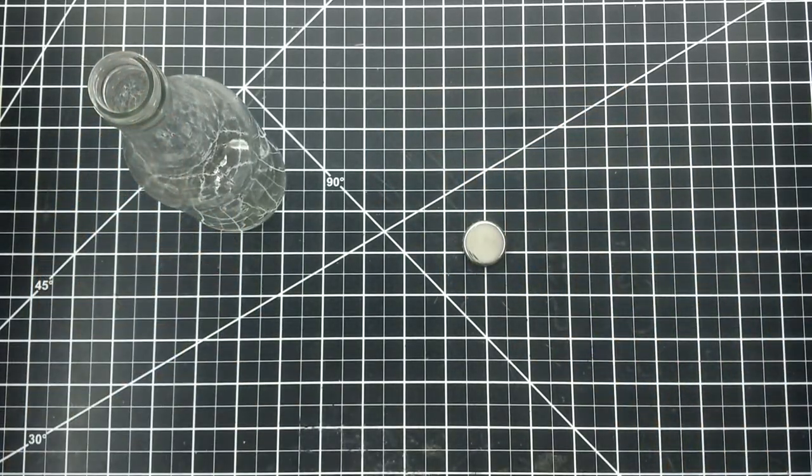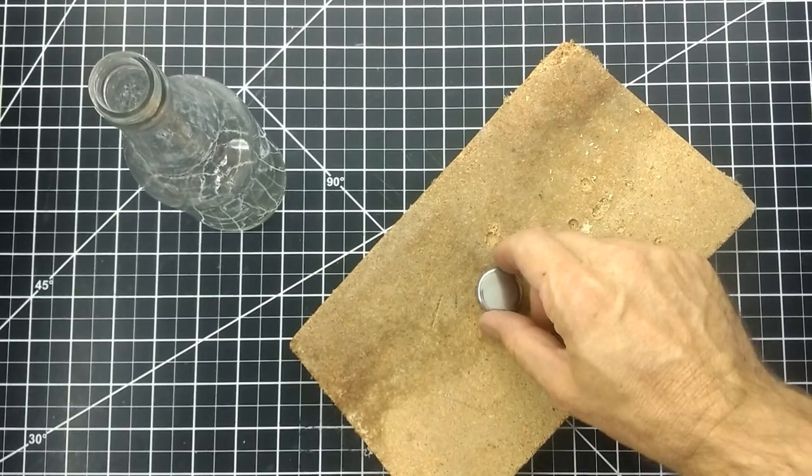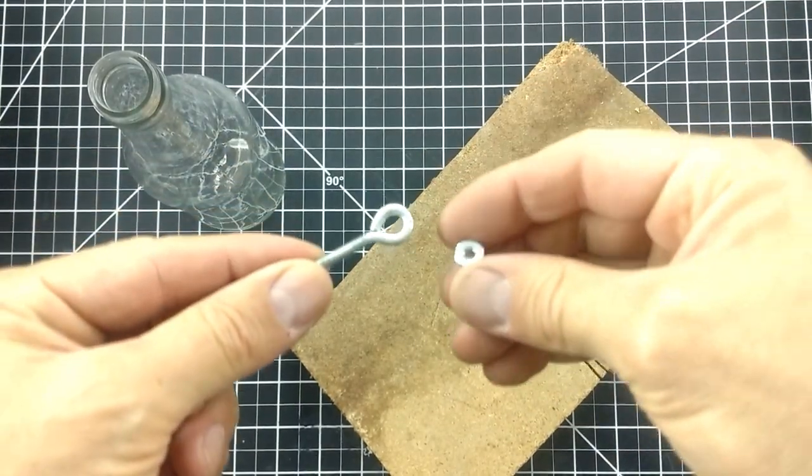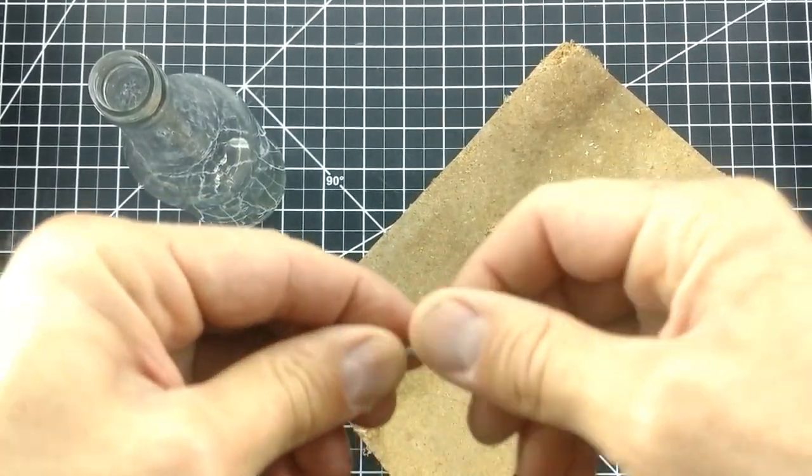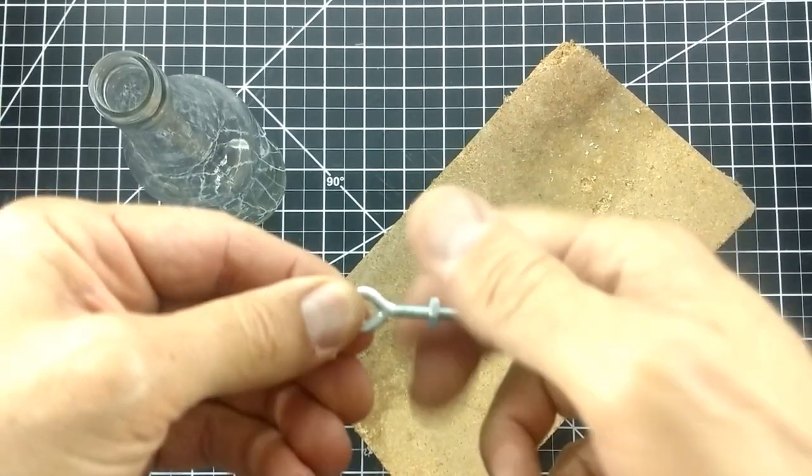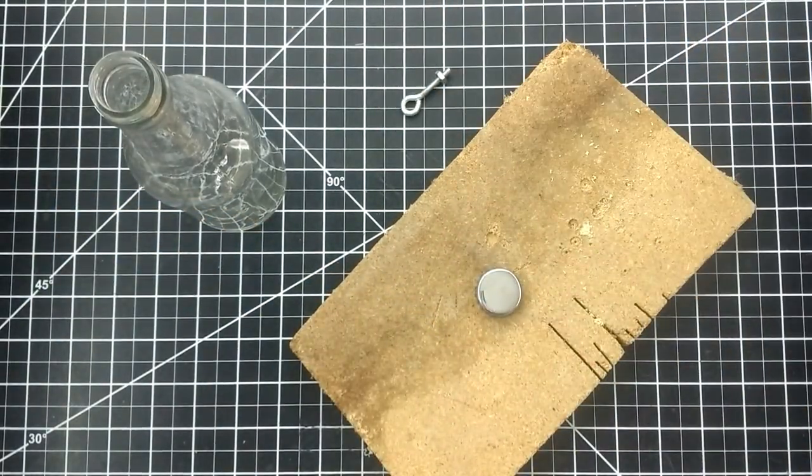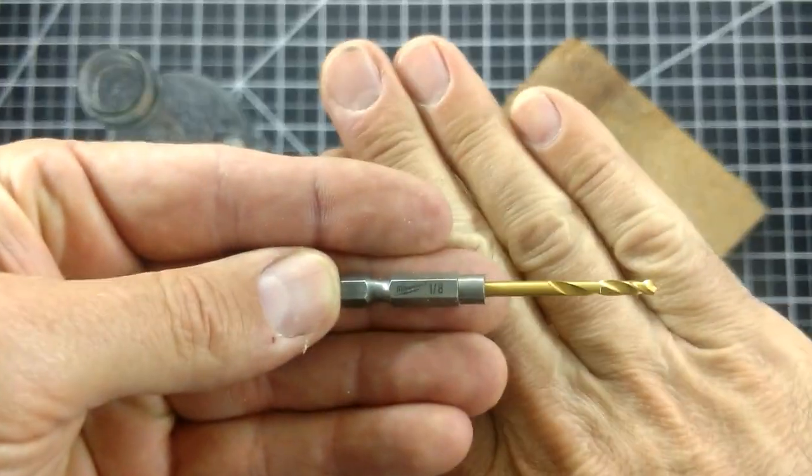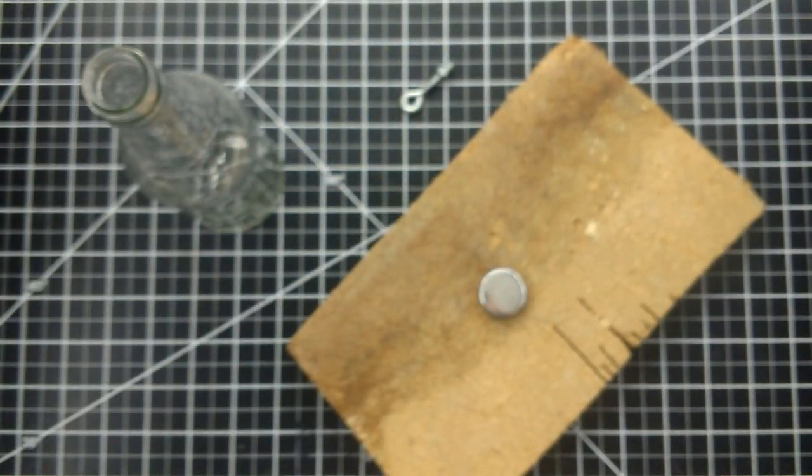I'm going to start with this bottle that has a twist off cap. I will be using this eyebolt so that the bottle will have a place to hook up to. With a 1 1/8 inch drill bit, I'm going to drill a hole into the bottle cap.